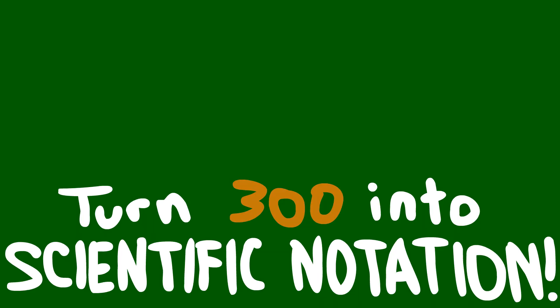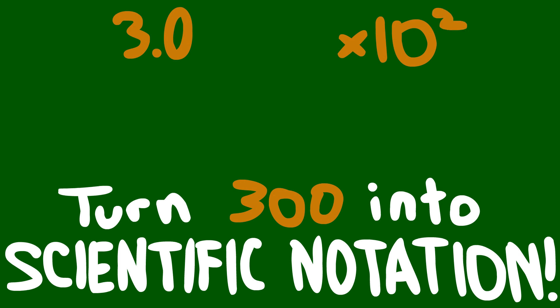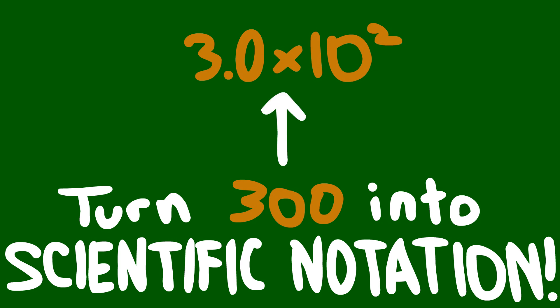Express your number so that it's more than one but less than ten. Take that number and multiply it by ten to the proper exponent. Three hundred in scientific notation is three times ten to the power of two. Ten to the power of two is one hundred times three.